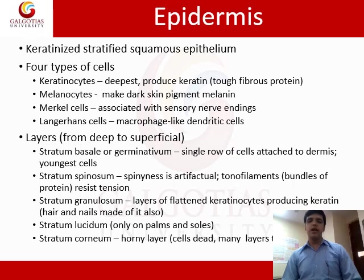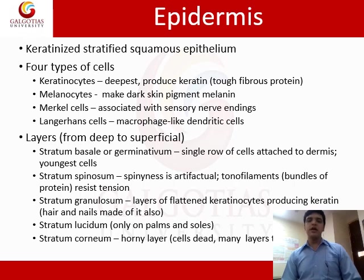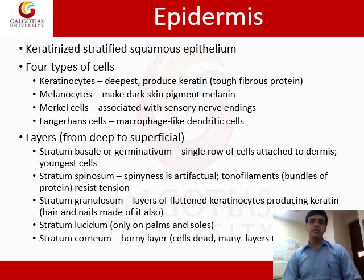Keratinocytes lie deepest and produce the keratin protein, the tough fibrous protein helping in the rigidity of the skin. Melanocytes make the dark pigment melanin, which is responsible for skin color. Merkel cells are associated with sensory nerve endings, allowing stimuli to be transferred to the brain. Langerhans cells function as macrophages or dendritic cells.